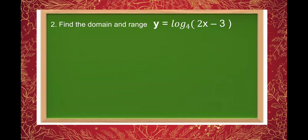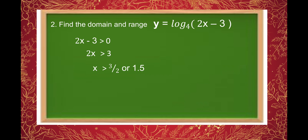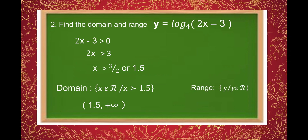Second example: find the domain and range of y is equal to log of 2x minus 3 to the base of 4. The argument is 2x minus 3. Setting up the inequality: 2x minus 3 is greater than 0. Solving for x: 2x is greater than 3, so x is greater than 3/2 or 1.5. The domain in set notation is x is an element of real numbers where x is greater than 1.5, and in interval notation, 1.5 to positive infinity. The range in set notation is all real numbers, and in interval notation, negative infinity to positive infinity.